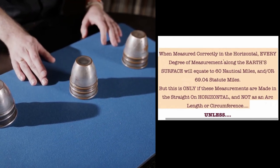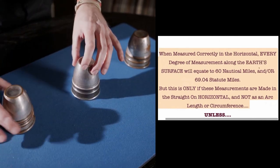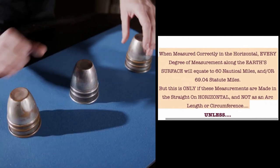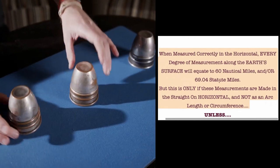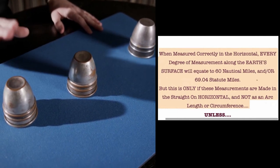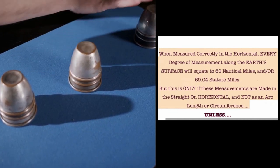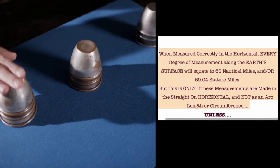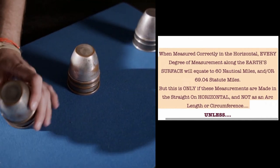When measured correctly in the horizontal, every degree of measurement along the earth's surface will equate to 60 nautical miles and or 69.04 statute miles. But this is only if these measurements are made in the straight on horizontal and not as an arc length or circumference.